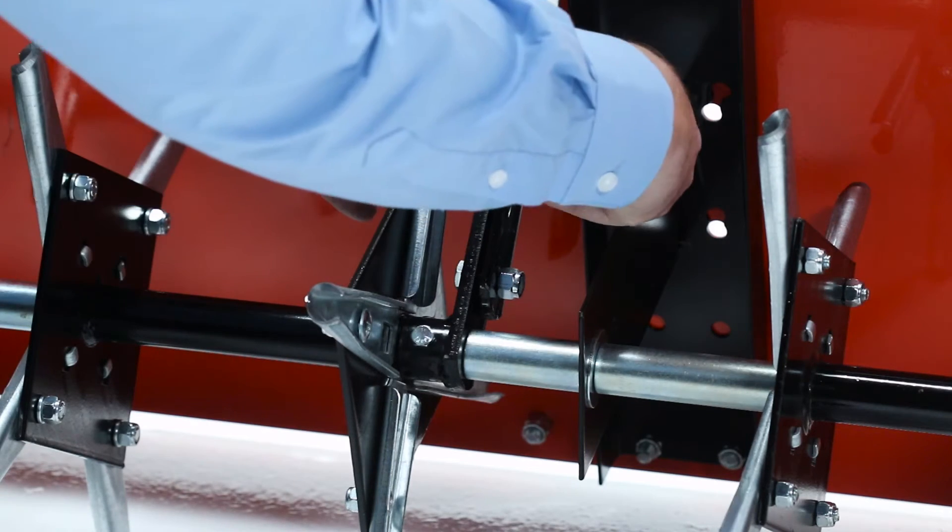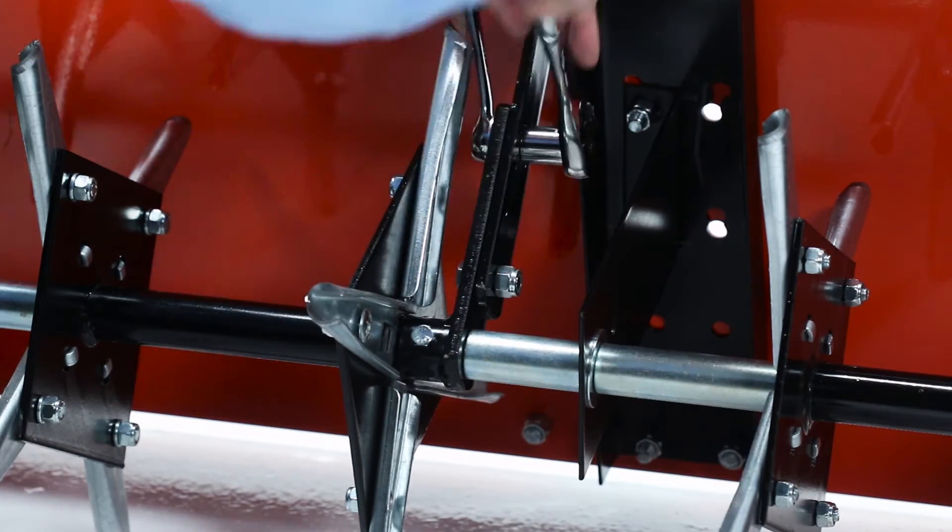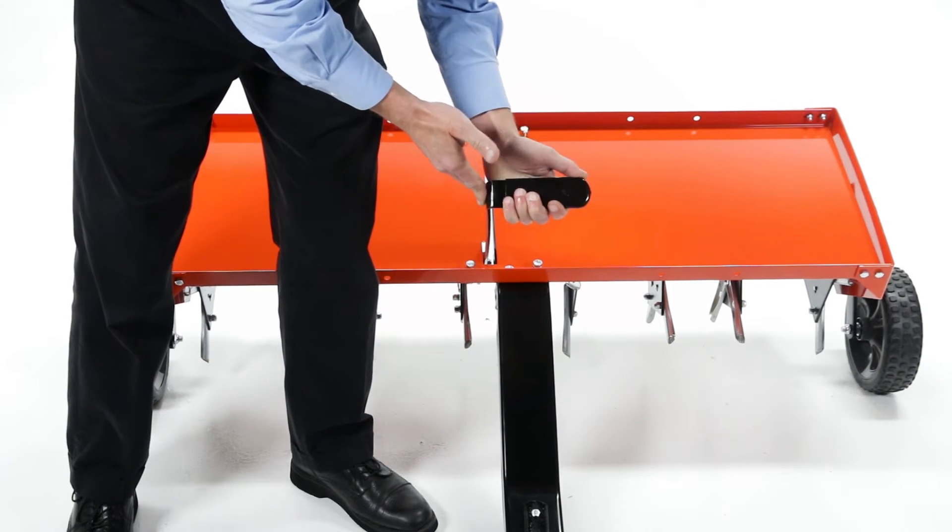Fasten the assembly with a 3 1⁄8 inch nylock nut part J. Now, fully tighten both bolts. Next, push the handle grip part W onto the end of the lift handle.